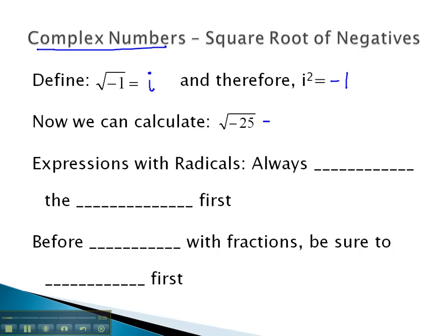Now, we can calculate the square root of negative 25, because we'll have the square root of the negative, which we can think of as a factor of negative 1, and 25 is 5 squared. The square root of negative 1 is i, and the square root of 5 squared is 5. This means the answer, the square root of negative 25, will be simply 5i.